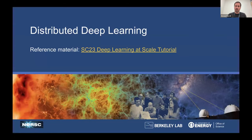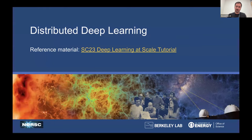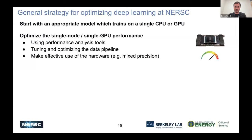Let's say you want to take it to the next level and start doing distributed deep learning. A lot of this material comes from a tutorial we do at conferences like Supercomputing — specifically from SC23, called 'Deep Learning at Scale'. If you're interested in learning more about performance optimization and parallelism for training deep learning models, I encourage you to come to our next version of that. The general strategy: if your model training is just not fast enough, here's how you go about optimizing and making things faster.